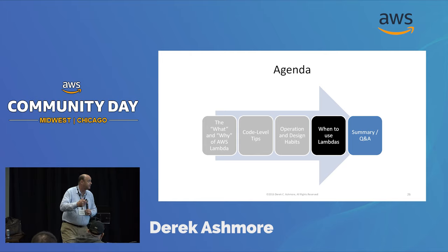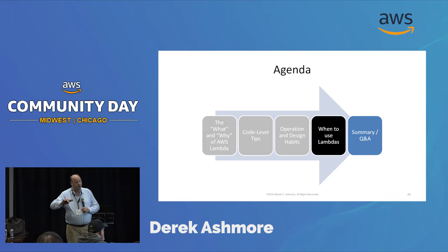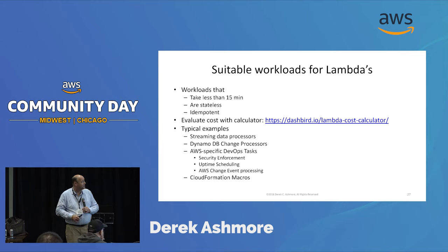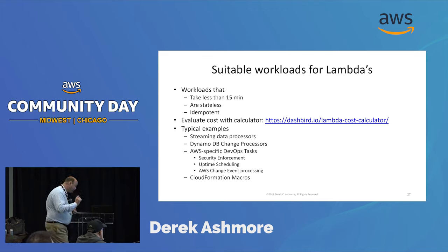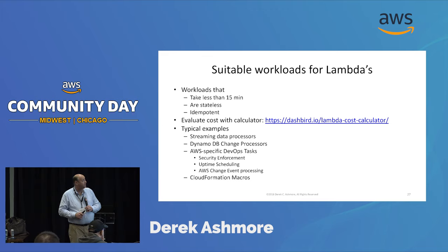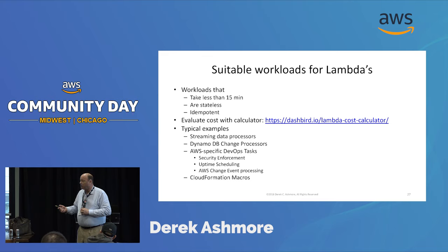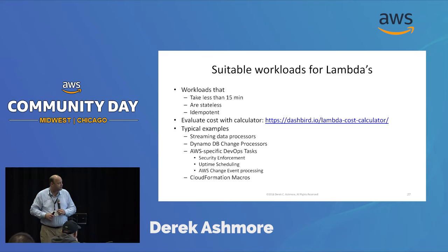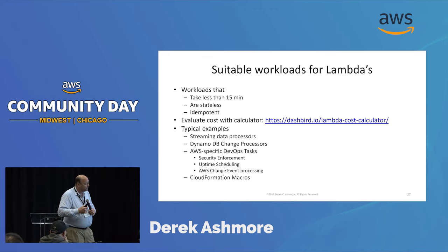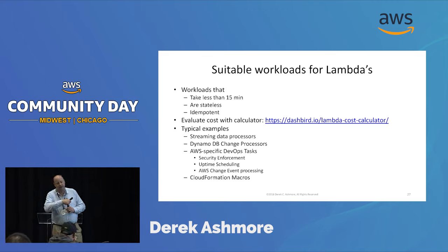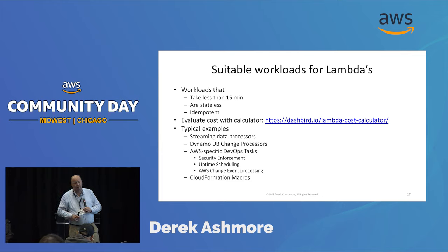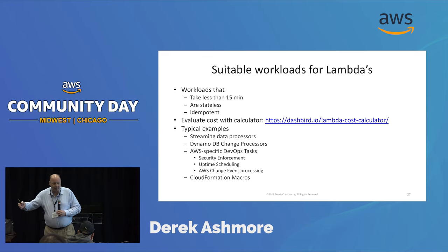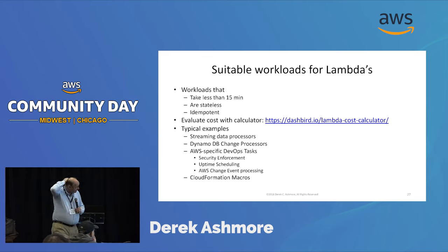When to use lambdas — suitable workloads are those that take less than 15 minutes or can be broken up, are stateless, and are idempotent. A common question is whether something should be a lambda or not. Beyond the idempotent and statelessness considerations, people also want to know about cost. Someone wrote a nice lambda cost calculator where you plug in allowed memory, allowed runtime, and expected number of executions, and it gives you a cost estimate.